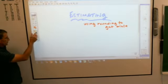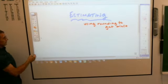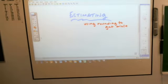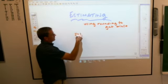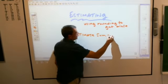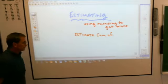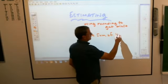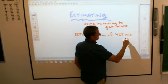Using rounding to get close. And sometimes people run into trouble with this. Let's see if we can get to that. But let's just say here, if the direction said to estimate the sum, estimate the sum of 467 and 312.